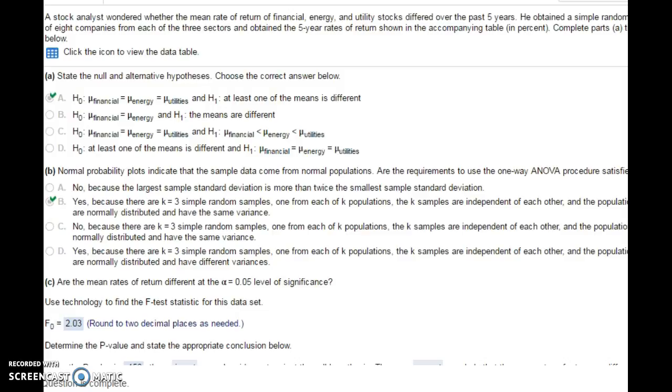Looking at an example from the homework, if it ever asks about the null and alternative hypothesis, the null is always that all the means are equal to each other. The alternative is that at least one of them is different. Now I'll show you how to use technology to figure out the F-test statistic. We'll compare it to alpha to decide whether we reject the null hypothesis or not.